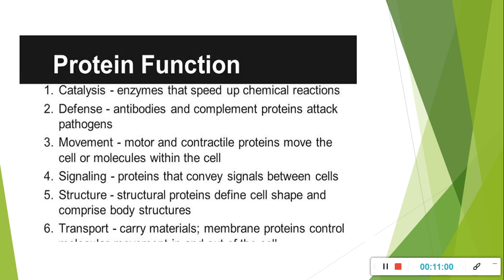Next is structural protein: structural proteins define cell shape and comprise body structure. The cell's structure, cell membrane, and cell shape and proper size are all determined by different types of proteins. Last but most important is transport: proteins carry materials, control membranes, and facilitate movement of signaling molecules. In summary, the key functions are catalysis, defense, movement, signaling, structural support, and transport.